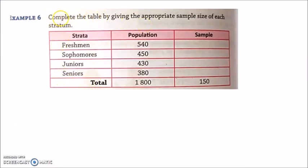Okay, here it is. Complete the table by giving the appropriate sample size of each stratum. We have here freshmen, sophomores, juniors, seniors. These are the populations. There are 540 grade 7 or freshmen. Sophomores are 450, grade 8. Grade 9, 430. Grade 10, 380. The total is 1,800. That's the population, denoted by usually big N, capital N. The sample, denoted by small n. The sample we need is 150. This is also just an example. Later, I will teach you how to identify how many should be the sample size in a given target population.